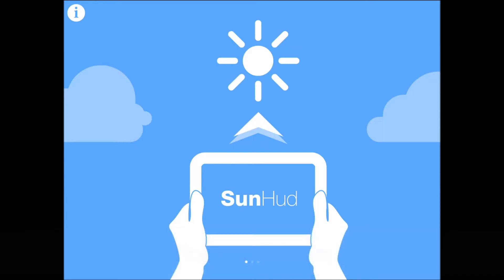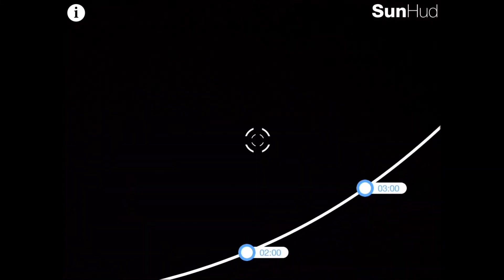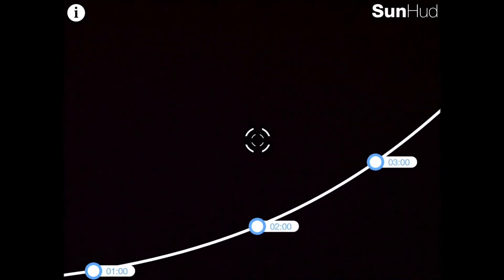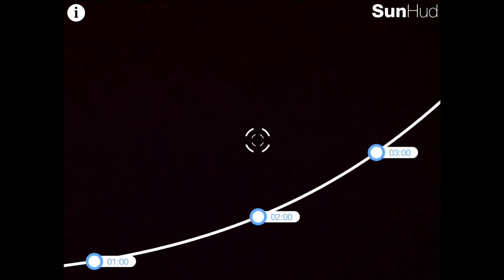So you just have to point your device to the sky and you'll see where the sun is going to be. Now if I move my device up and down, as you can see it changes.